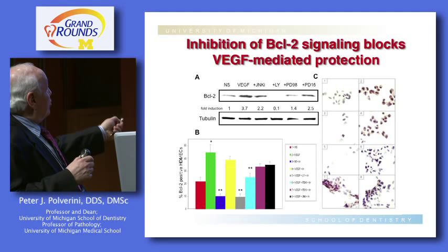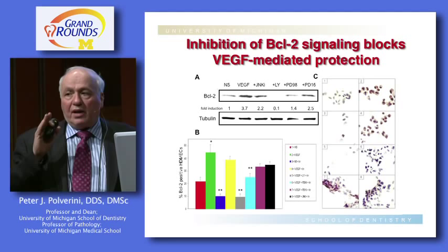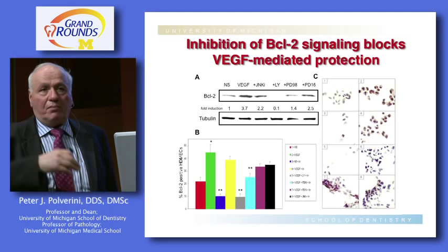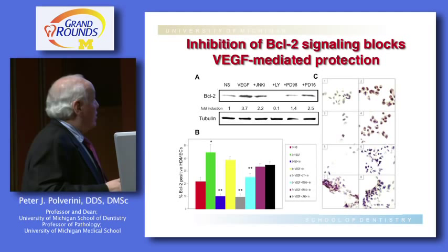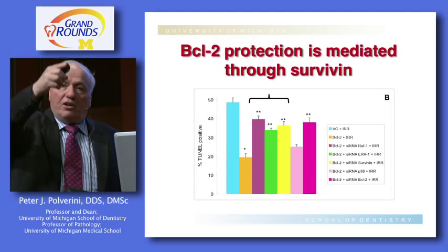We weren't done yet, because we knew there were probably other important events occurring. Over a four- or five-year period, we came to the realization that the key signaling pathways also involve RAP, ERC, and survivin — an important protein downstream. We linked the entire pathway and found that the target protein we may want to consider is survivin.